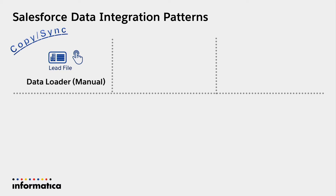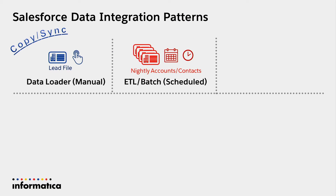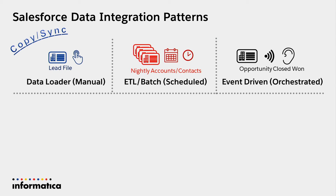The copy and sync pattern pushes information into Salesforce — you create records and objects. You can do it manually through a data loader, have a nightly scheduled batch to move accounts and contacts between systems, or even do event-driven orchestration: an opportunity is closed-won, something is created in NetSuite or SAP, and at the moment it happens that record gets created.